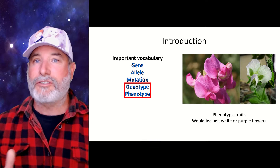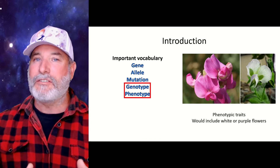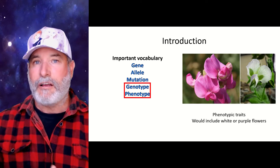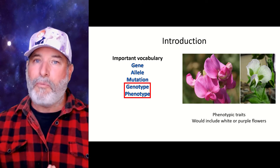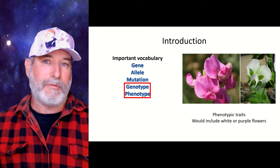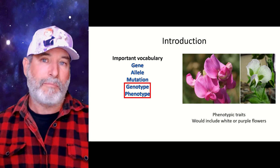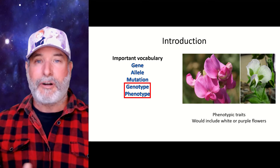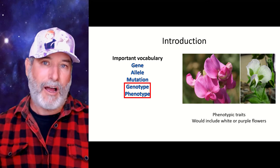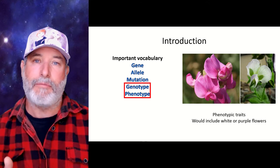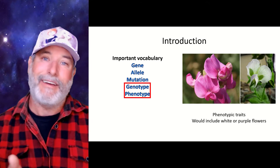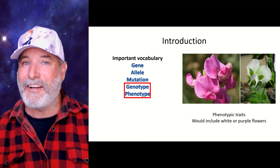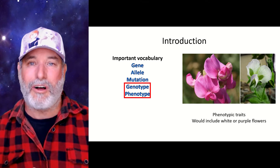The genotype is what genes you actually have, and the phenotype is what you're expressing. For example, the purple flower could have two different genotypes: it could have two copies for purple, or one copy for purple and one copy for white — but its phenotype is purple. The white flower's phenotype is white, and its genotype is two alleles for white. When we get into Mendelian inheritance, we'll understand what all that means more.